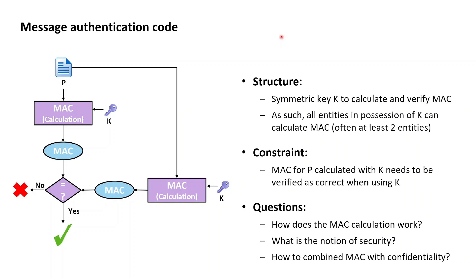Message authentication codes are systems where the state of information is captured in something known as a MAC tag, and the MAC tag is calculated based on the information and a symmetric key K. The integrity of the information can then be verified later on by recalculating the MAC tag under the same symmetric key K.